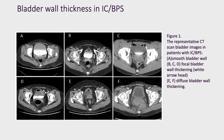Picture 1 shows CT scan bladder images in patients with IC/BPS. Picture A was smooth bladder wall. Pictures B, C, and D were focal bladder wall thickening. Pictures E and F were diffuse bladder wall thickening.